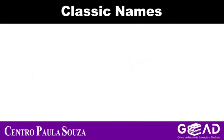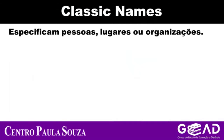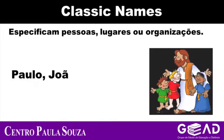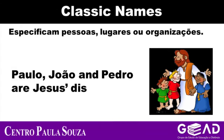Pay attention. Entretanto, quando se tratam de nomes clássicos, deve-se acrescentar apenas o apóstrofo ao nome, ok? Example: Jesus. Paulo, João e Pedro are Jesus' disciples.